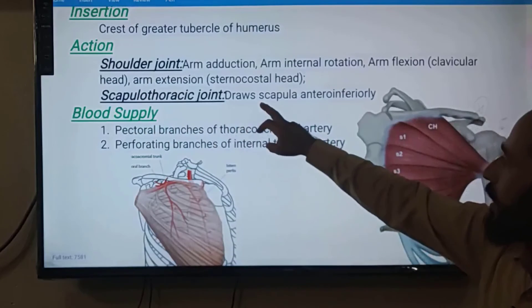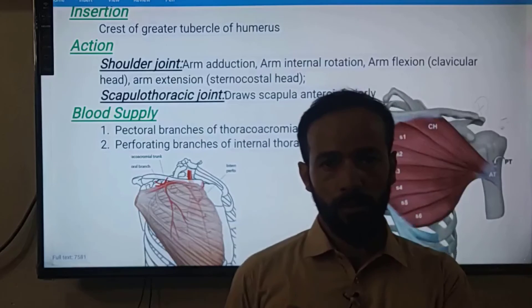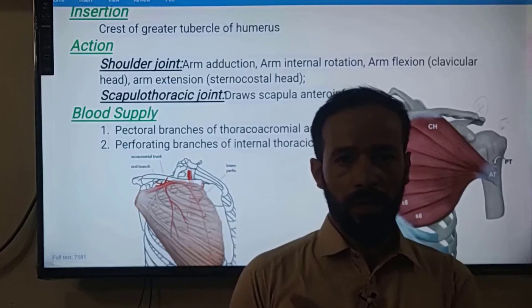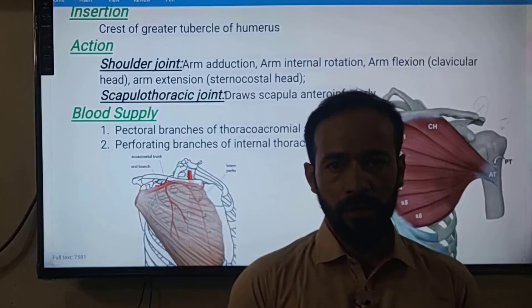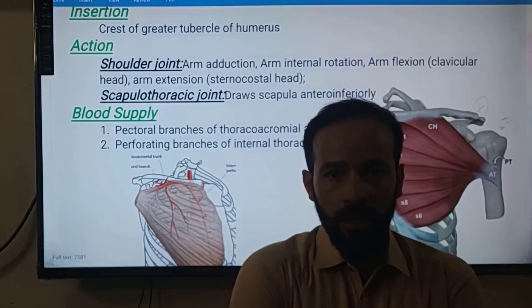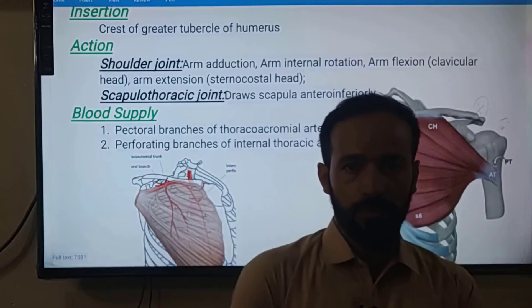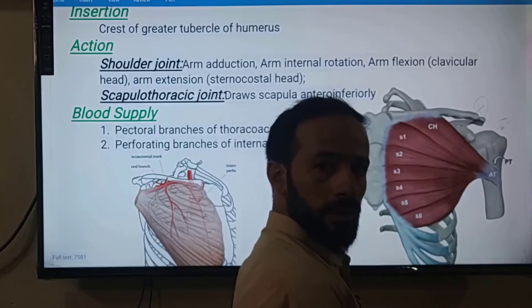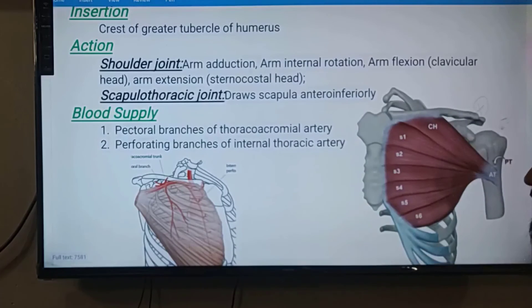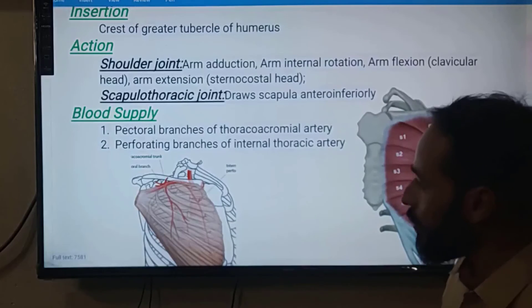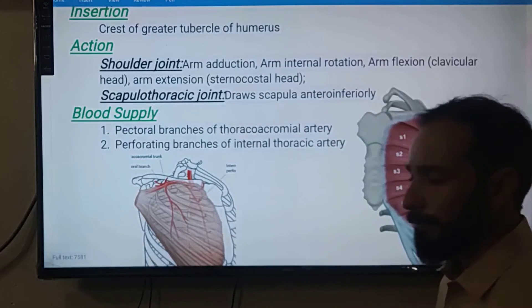At the scapulothoracic joint, when pectoralis major contracts it draws the scapula anteriorly and inferiorly. So the scapula moves anteriorly and inferiorly. These are the actions of the pectoralis major muscle.